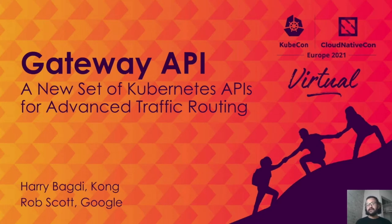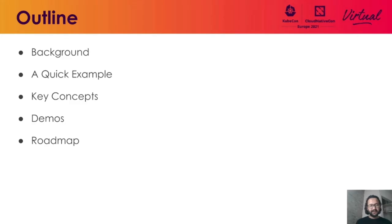Before we get started, I want to mention that this API is a result of a community-wide effort within the SIG Network API group in Kubernetes, and this wouldn't have been possible without contributions from all the members in that group. We're going to give a little bit of background and then give some quick examples of the API, which should give you a good feel of how this API looks like. And as we go through these examples, we'll explain some key concepts in how and why the API was designed the way it is. And then we have some cool demos to show some existing implementations of this API, and then we conclude with some roadmap and future for this API.